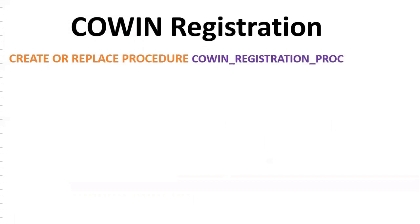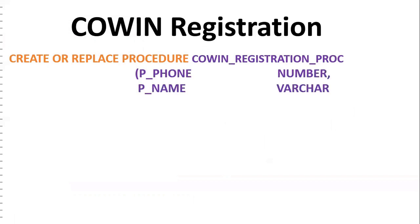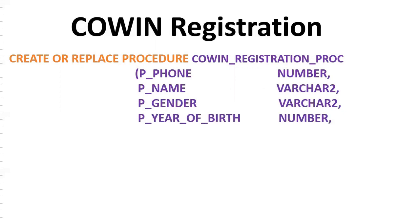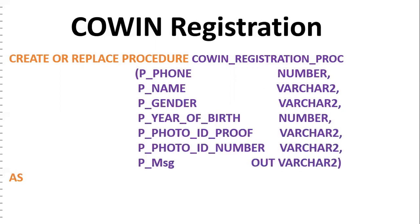We write a procedure: CREATE OR REPLACE PROCEDURE covin_registration_proc. The procedure has input parameters: phone number, name, gender, year of birth, photo ID proof (the type of ID being submitted), and photo ID number. There is also one OUT parameter — p_message — to show the user whether the record has been created or not. So we have six input parameters and one output parameter.